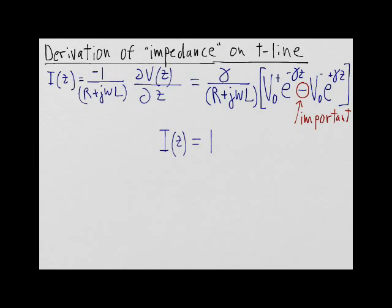We can also write that I of z is equal to i zero plus e to the minus gamma z plus i zero minus e to the plus gamma z.